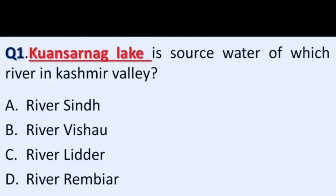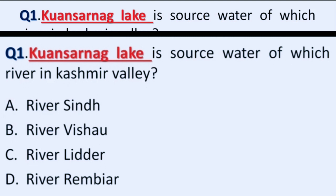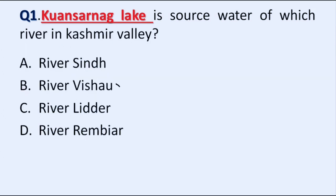Our first question is: Kousar Nag Lake is the source water of which river in Kashmir Valley? Option A: River Sindh, B: River Vesho, C: River Leder, D: River Rambir. Correct answer is Option B, River Vesho.